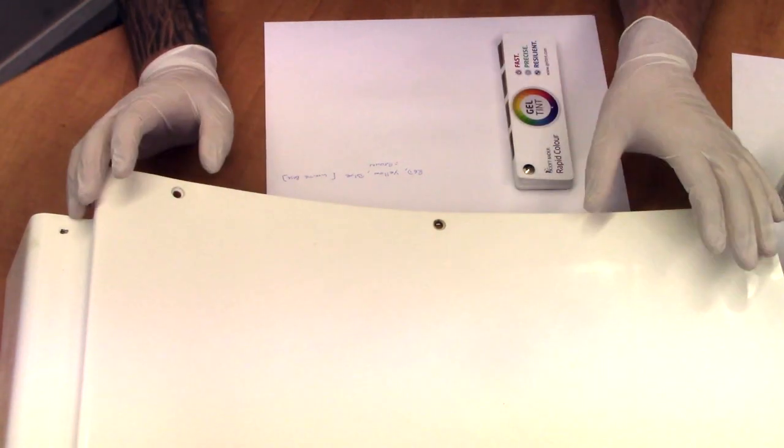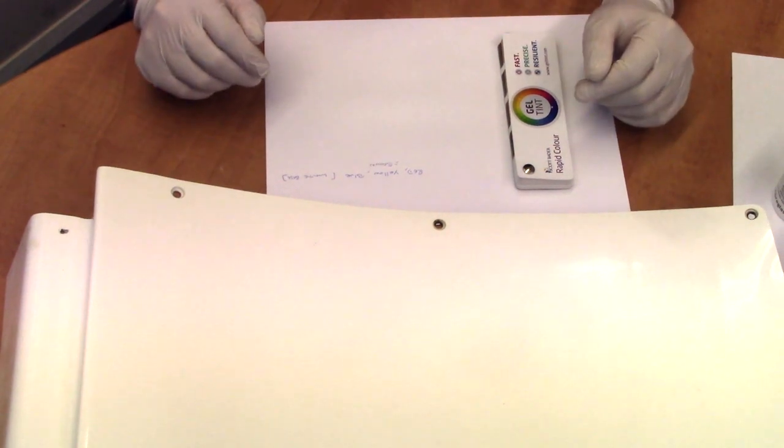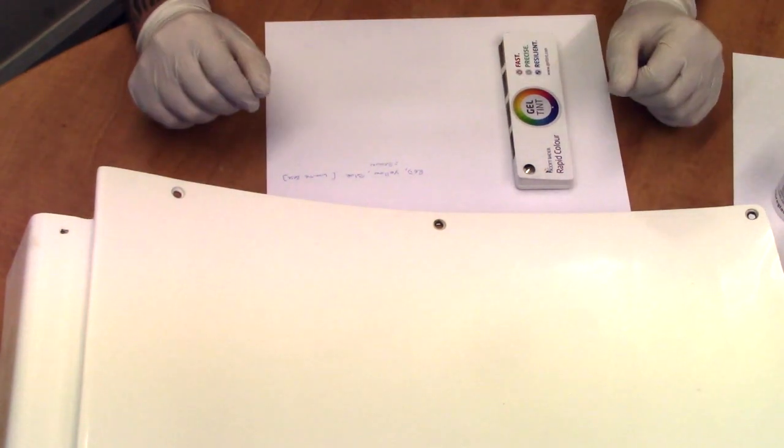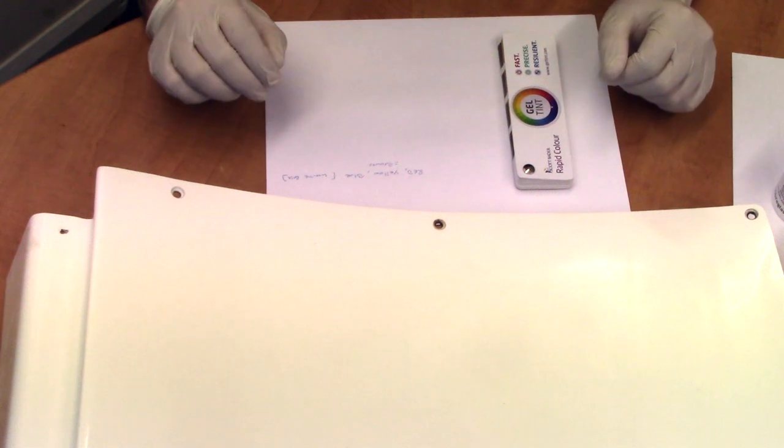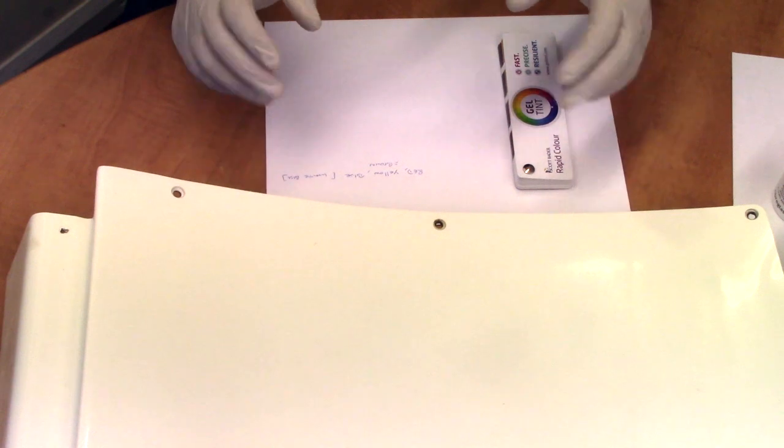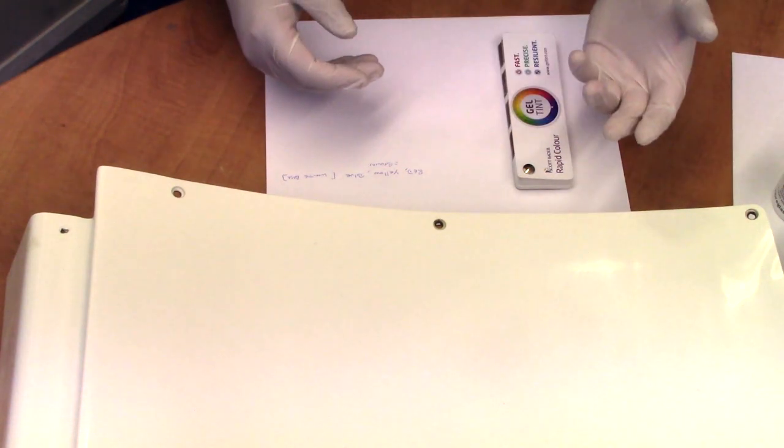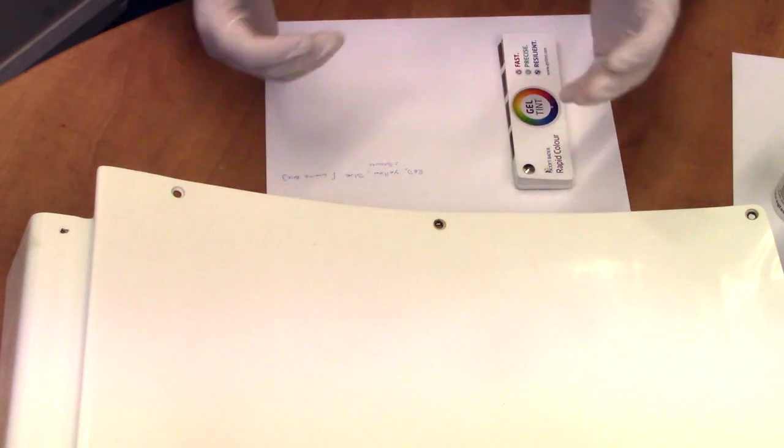In this video we're going to demonstrate how you can get a color match on your boat or any other GRP item that you want to match the color of. Now most gel coats come in a color range known as BAS or British Standard or known as a RAL color.